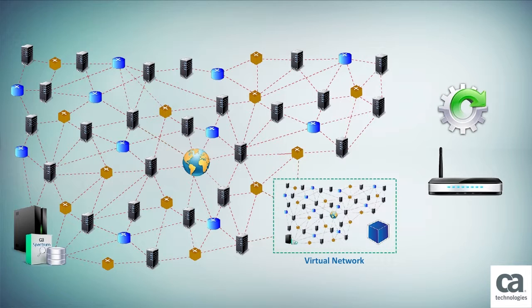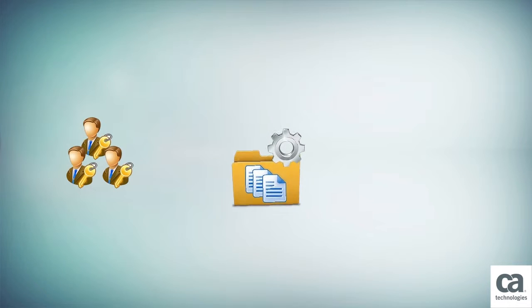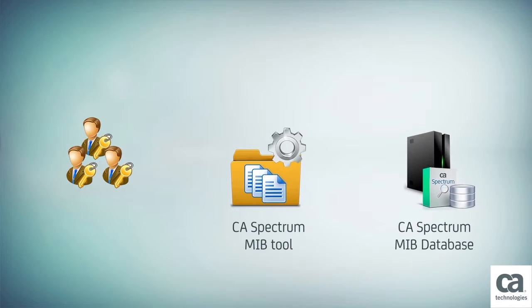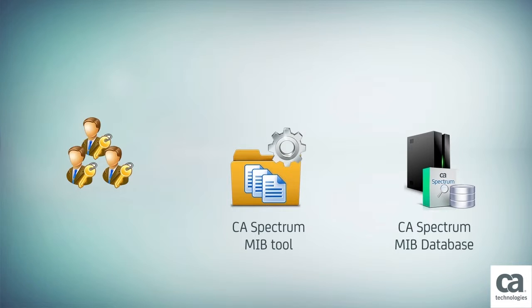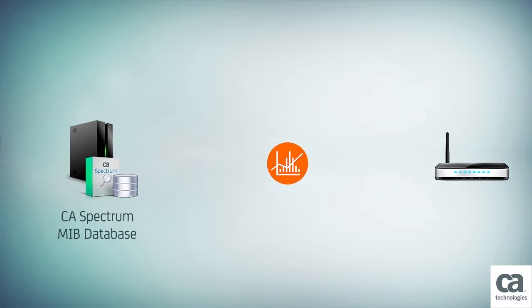However, they realize that these devices are currently not certified in CA Spectrum 9.4. Hence, the network administrators in Bunaire Airlines need to use the CA Spectrum MIB tools and import MIBs into CA Spectrum's MIB database. Doing this will not only help them query the device information and metrics in the MIBs, but also allow them to set up watches.